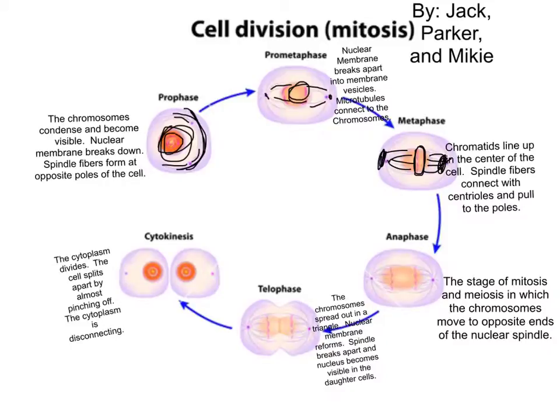Then to the next phase, anaphase. This is the stage of mitosis and meiosis in which the chromosomes move to the opposite poles — opposite ends of the nuclear spindle.